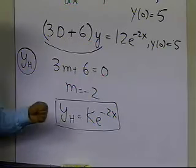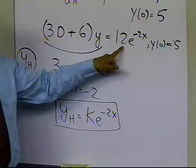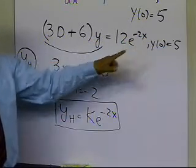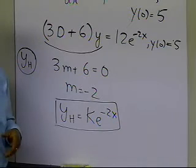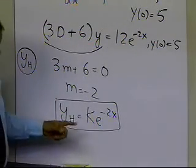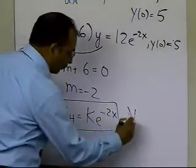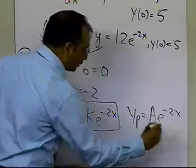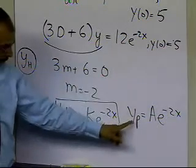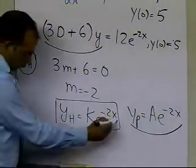Now let's find the particular part. The particular part should be of the form of the right-hand side — some constant multiplied by e to the power minus 2x, and all its possible derivatives are also of the form e to the power minus 2x. However, the homogeneous part is already k·e to the power minus 2x, so I cannot choose the particular part to be of the form a·e to the power minus 2x, because substituting it into the equation would give 0, not 12e to the power minus 2x.